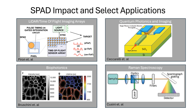In biophotonics, SPADs are used for time-correlated single photon counting in applications like fluorescence lifetime imaging microscopy, where they provide high temporal resolution to detect faint biological signals. In Raman spectroscopy, they can enhance the sensitivity to weak Raman signals, enabling high speed, low light spectroscopy for material characterization and chemical analysis.